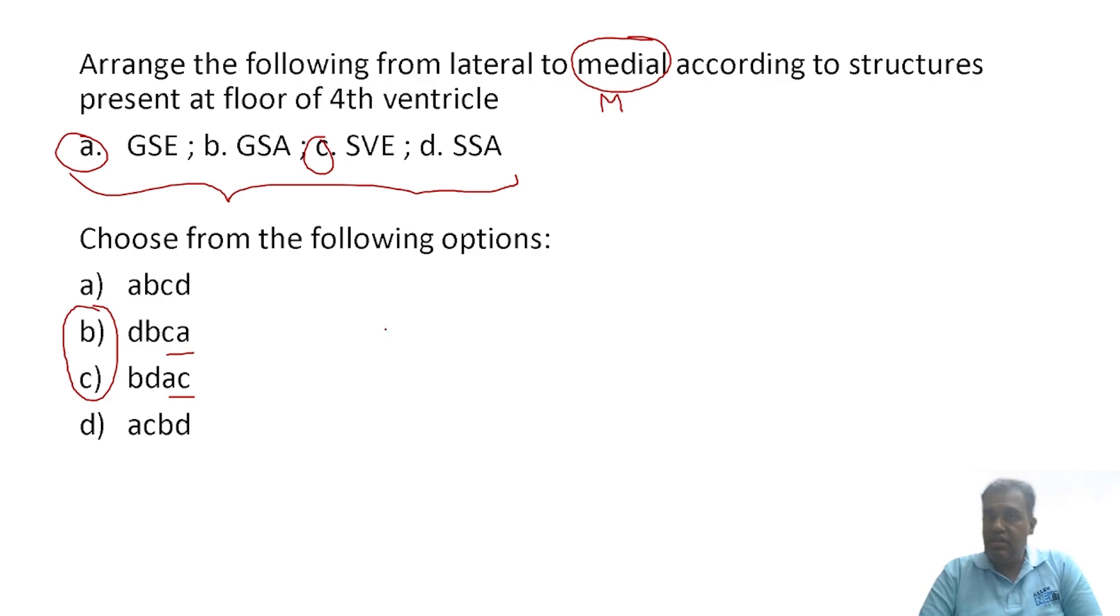Most medial will be the pure motor cranial nerves: 3, 4, 6, and 12. These come under general somatic efferent. Option A is most medial - general somatic efferent. Therefore we can go with option B as the answer, because in option B, option A is present most medially. Most lateral is the vestibulocochlear, that is special somatic afferent, because pure sensories are most lateral.